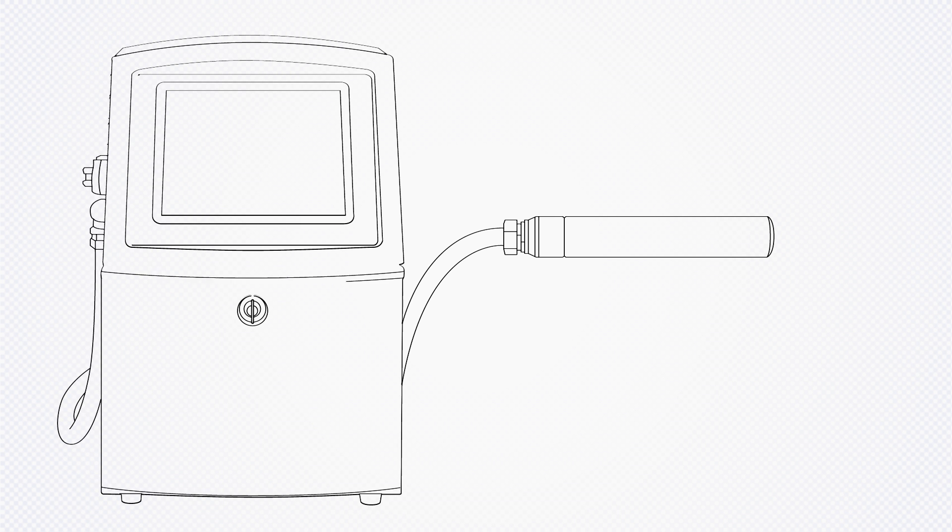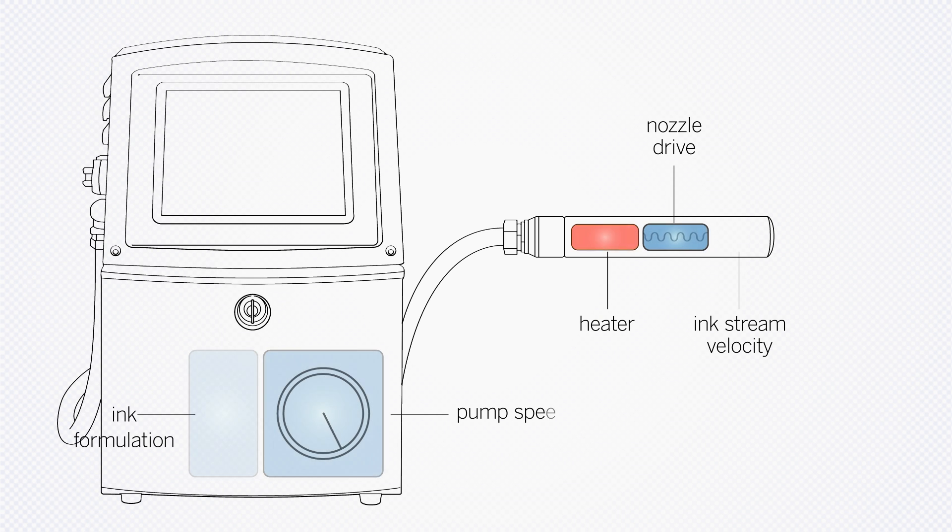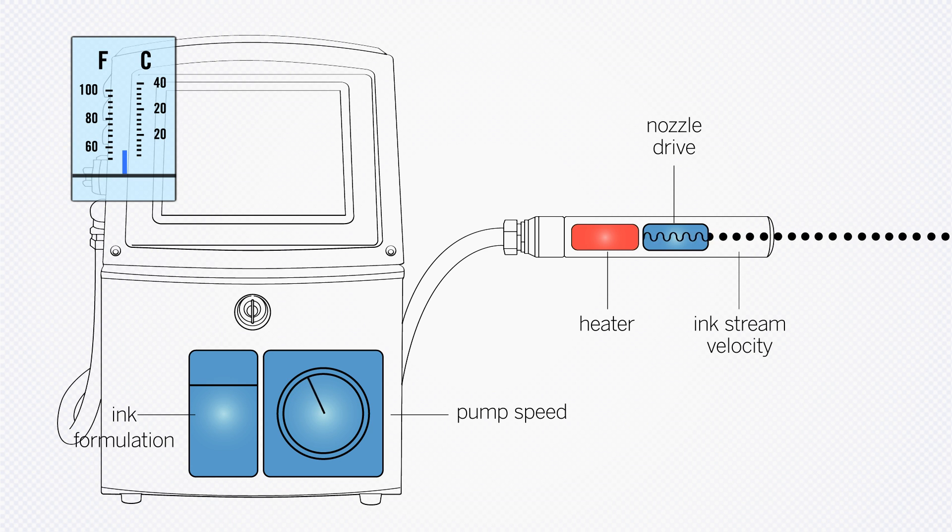The system maintains constant jet velocity, ink viscosity, and drop formation by dynamically controlling pump speed, nozzle drive, and printhead heater temperature.